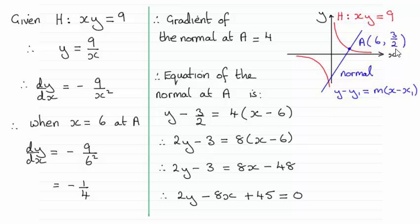We're asked to show that the normal to the hyperbola H at the point A has this particular equation. I'll take you through the method, just in case there were any problems.